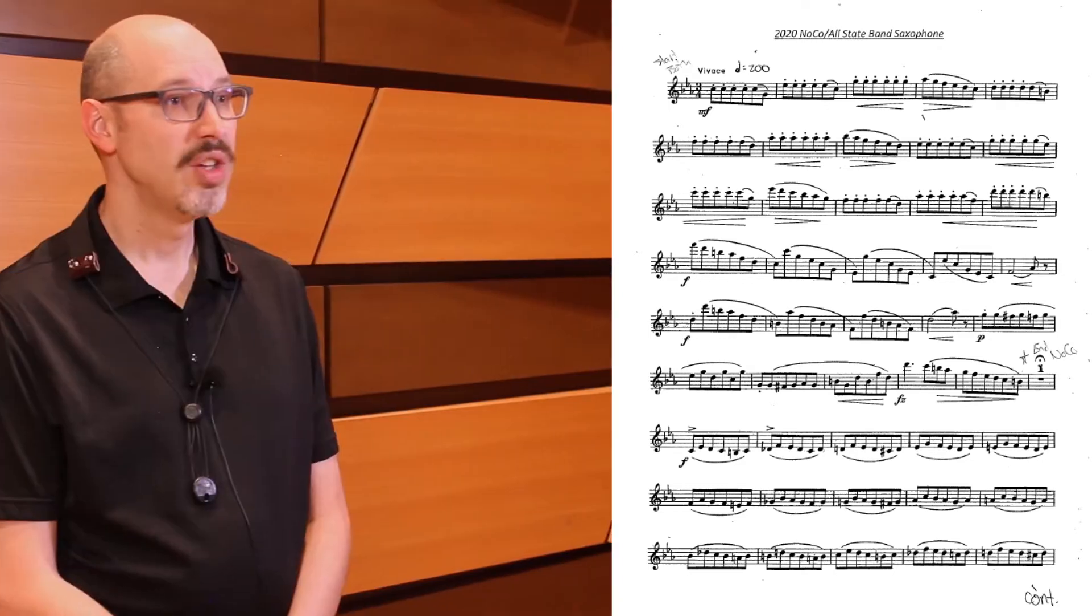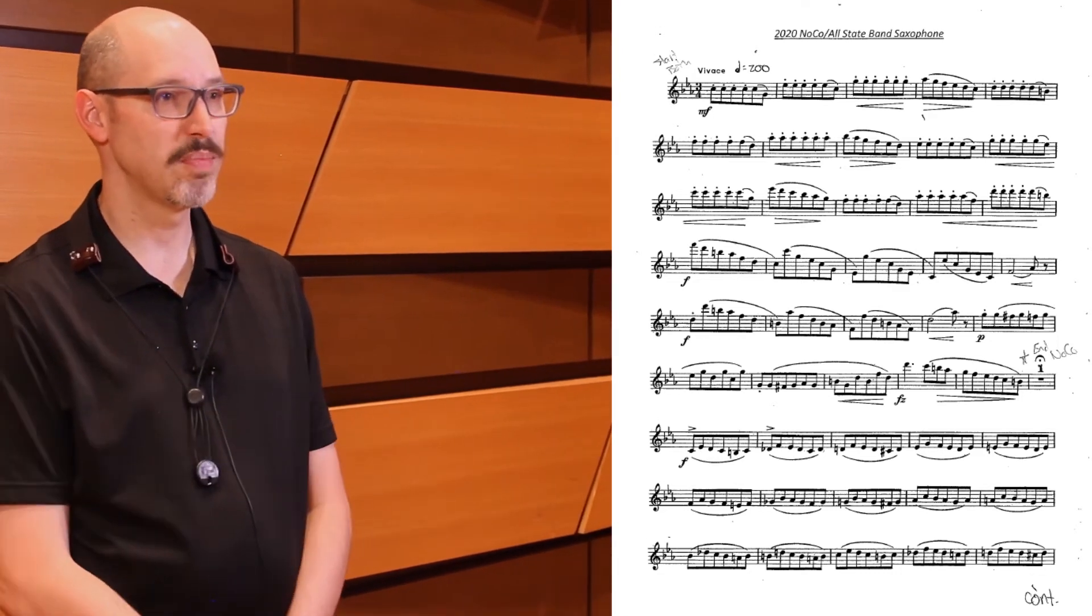Rather than starting right away at the suggested audition tempo of quarter note equals 200, find a tempo that allows you to play the most difficult material comfortably and accurately. You may want to split this particular etude up into two large sections before and after the fermata at the end of the sixth line. Which measures are the hardest for you to play? Find the tempo where you can play these measures evenly and accurately, even if it's much slower than the indicated tempo. Use this tempo as the tempo you'll practice this particular section.